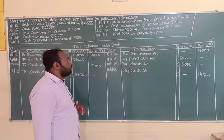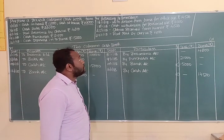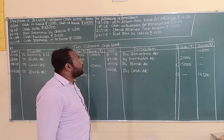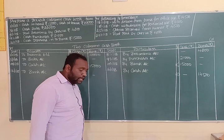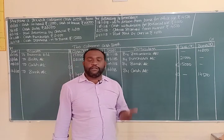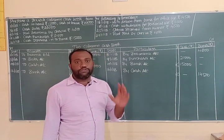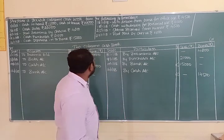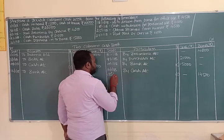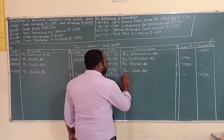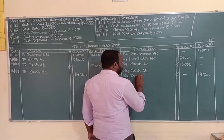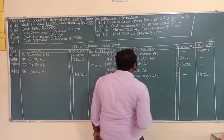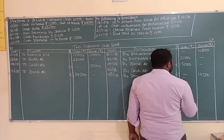On 18th January 2018, cash withdrawn for personal use. Personal use, private use, or domestic use is called drawings. The journal entry is drawings account debit to cash account. We record 'By Drawings Account' on the credit side, entering rupees 6,000 in the cash column.